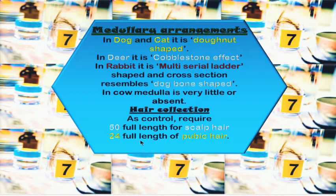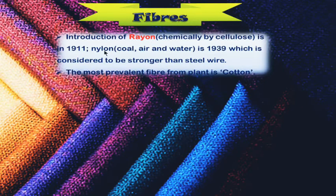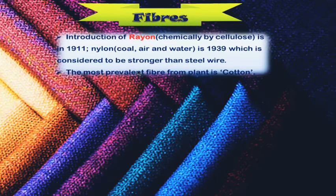Next we move to fibers. The first artificial fiber was rayon, introduced in 1911, produced by the chemical processing of cellulose. Nylon came after rayon, in 1939, produced from coal, air, and water. Nylon fiber is stronger than steel wire. The most prevalent fiber from plants is cotton.